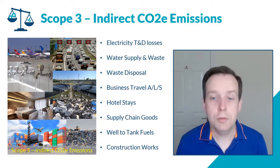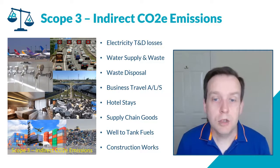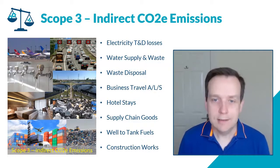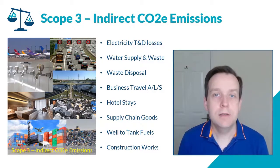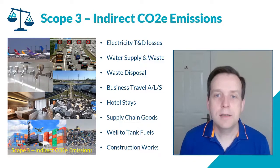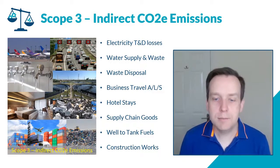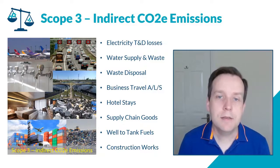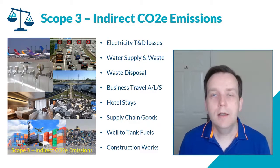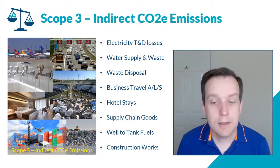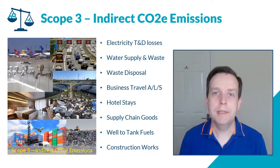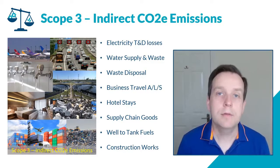Your business reports that under scope three. Scope three covers a wide range: water usage — both water into your business and wastewater out — hotel stays, staff travel, business travel, business expenses, and the largest category, supply chain goods — your suppliers into the business and the onward distribution of your finished product. Also consider construction works: if you're building or demolishing buildings on site, that is included in your scope three emissions.